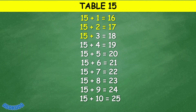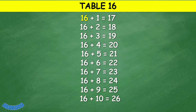Table 15: 15 plus 1 equals 16, 15 plus 2 equals 17, 15 plus 3 equals 18, 15 plus 4 equals 19, 15 plus 5 equals 20, 15 plus 6 equals 21, 15 plus 7 equals 22, 15 plus 8 equals 23, 15 plus 9 equals 24, 15 plus 10 equals 25.